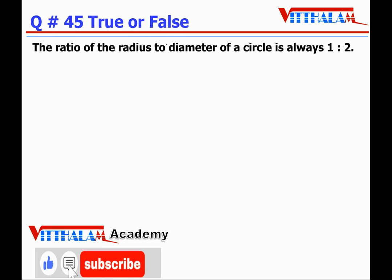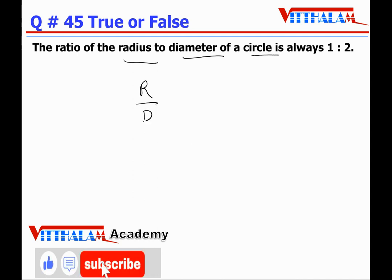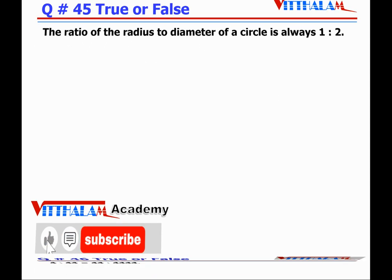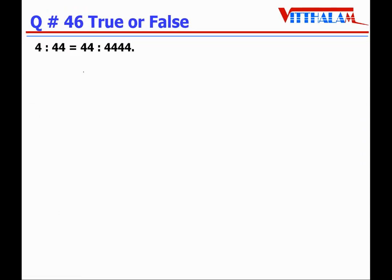Question 45: The ratio of the radius to the diameter of a circle is always 1:2 — True. Radius divided by diameter: since diameter equals 2 times radius, the ratio is 1/2, that is 1:2. So it is True.